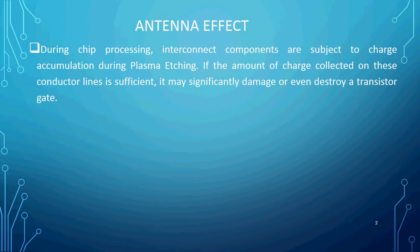During chip fabrication, what will happen? The charges will be accumulated in the metal plate. Due to the charges accumulated in the metal plate, the gate oxide will be damaged permanently. This is the definition for antenna effects.